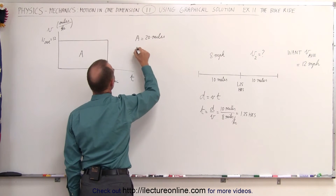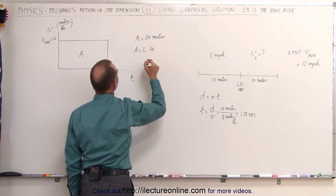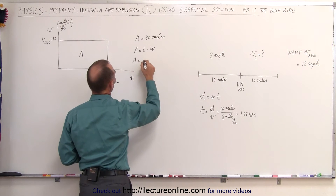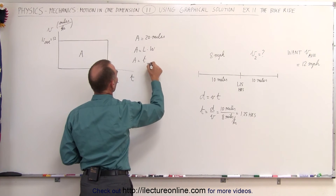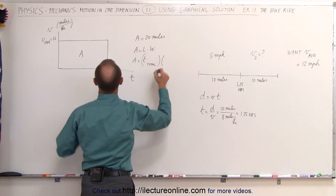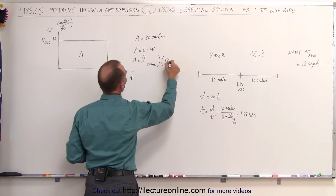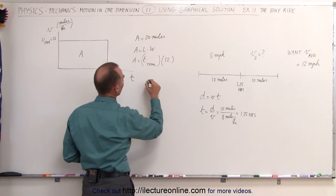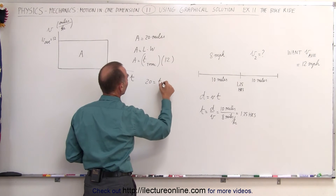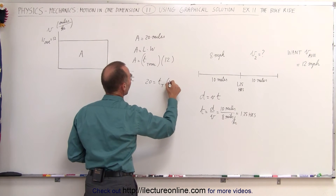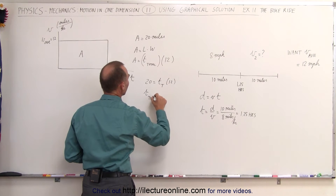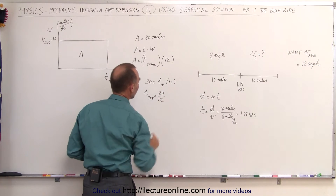We know that area equals length times width, so area equals the total time (which we don't know yet) times the average velocity of 12 miles per hour. The total area is 20, so 20 equals time total times 12, or time total equals 20 divided by 12.